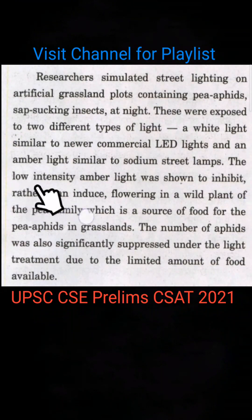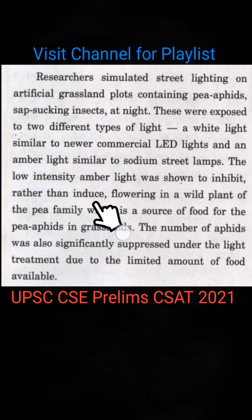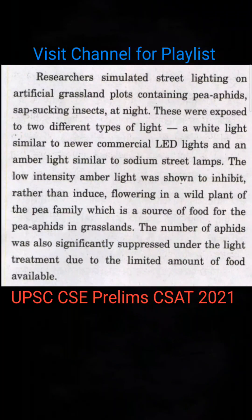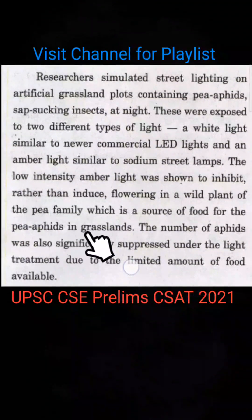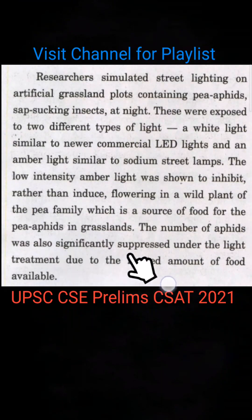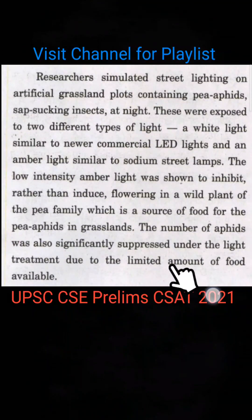The low-intensity amber light was shown to inhibit flowering of wild plants, which are a source of food for organisms in the grassland. The wild plant was not able to flower. The number of insects was also significantly suppressed under the light treatment due to the limited amount of food available.